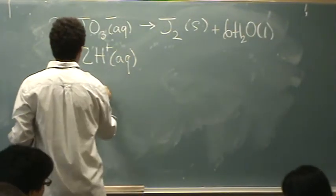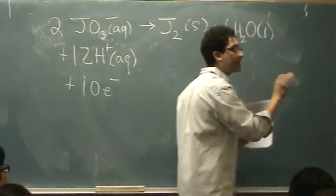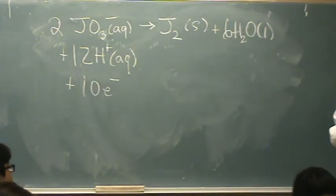So I need ten electrons here so that both sides will have the same charge in the end. Whatever that charge is, in this case it happens to be zero.